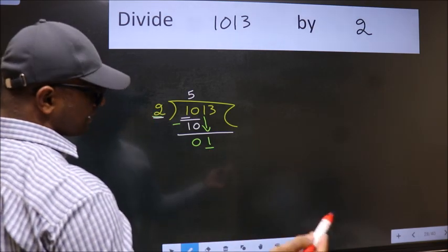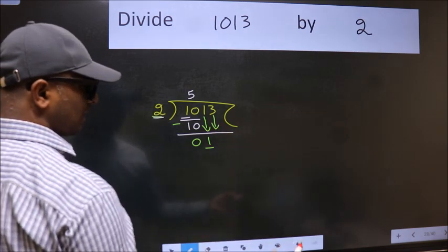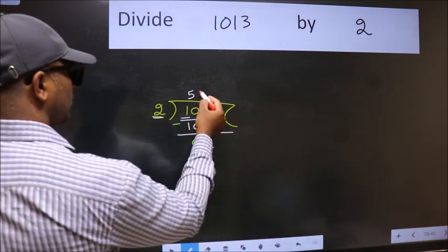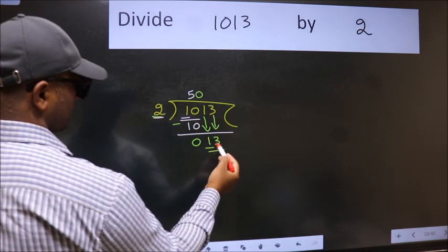So we should bring down the second number. And the rule to bring down second number is put 0 here. Then only we can bring this number down. So 13.